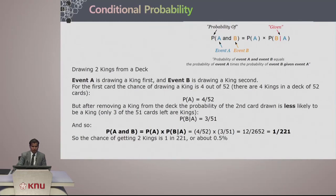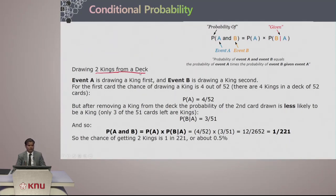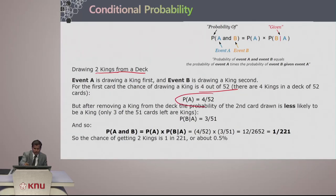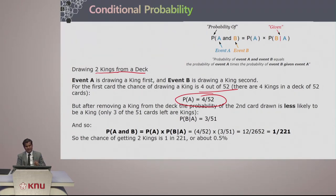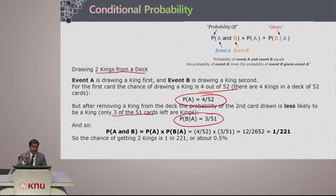Let us move on to a simple example of drawing two kings from a deck of playing cards. Event A is drawing a king first, and event B is drawing a king in your second chance. For the first card, the chance of a king is 4 out of 52, since four kings are in a deck of 52 cards. But after removing a king, the probability of drawing a king the second time is less likely — only 3 out of 51 remaining cards.